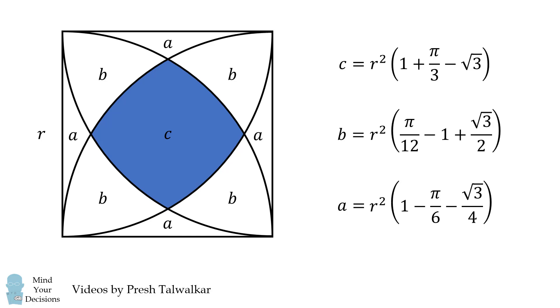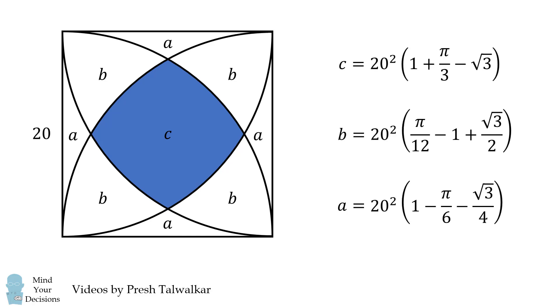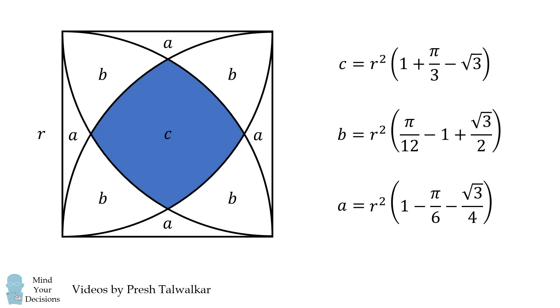We can solve for any value of r. Suppose r is equal to 20. This will be equal to approximately 126.06. But I think it's awesome that we can solve for a, b, and c for any value of the side of the square.